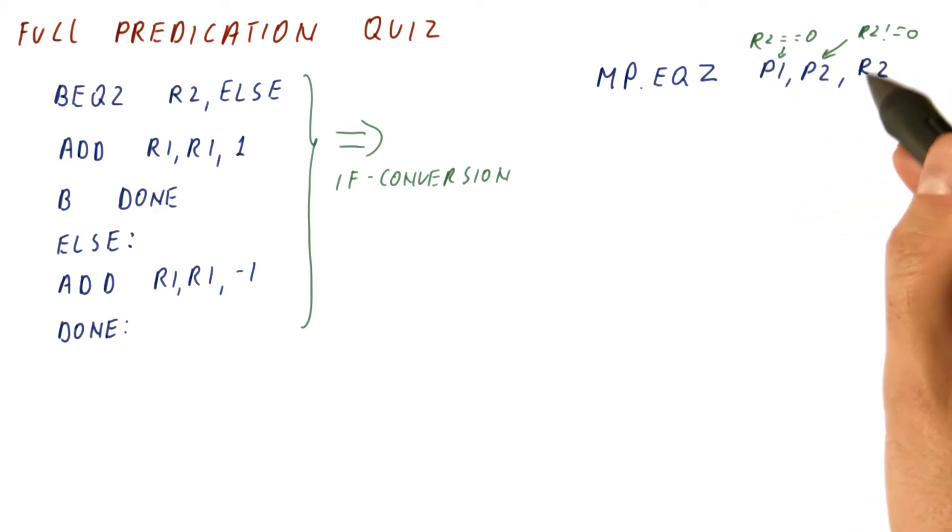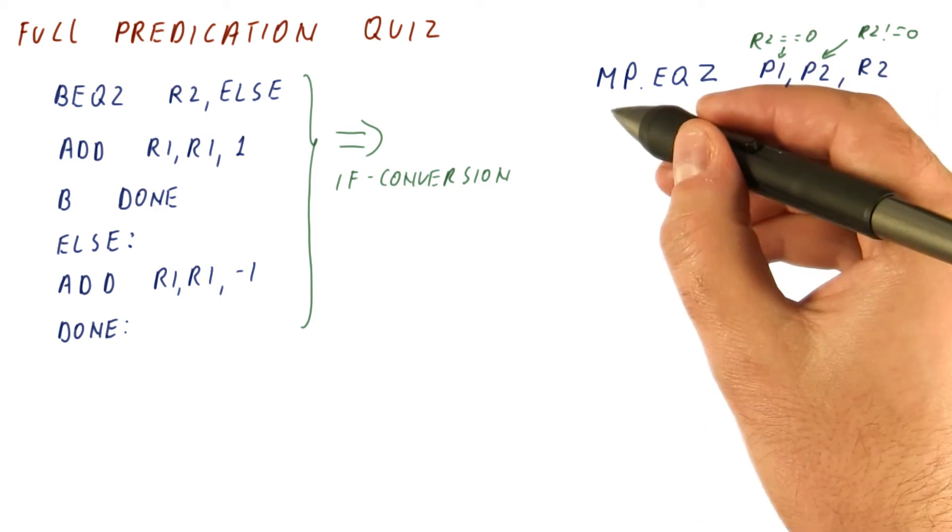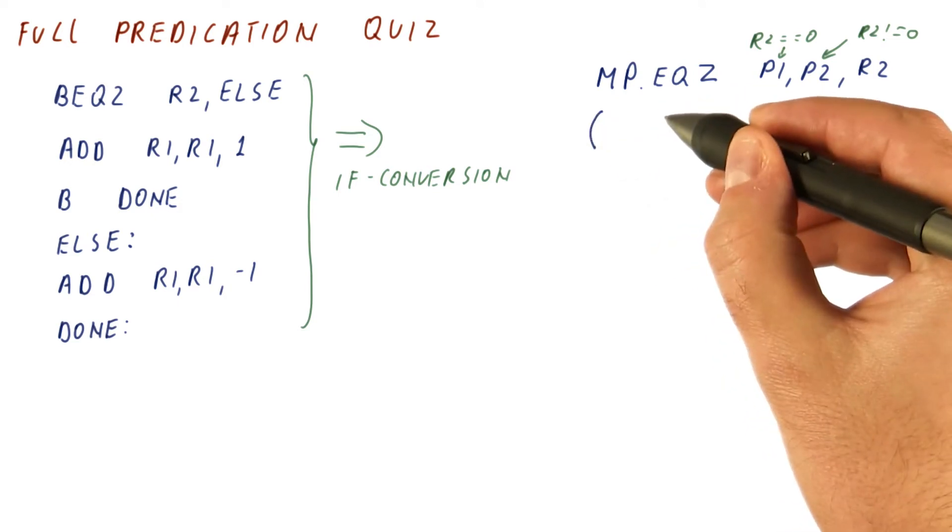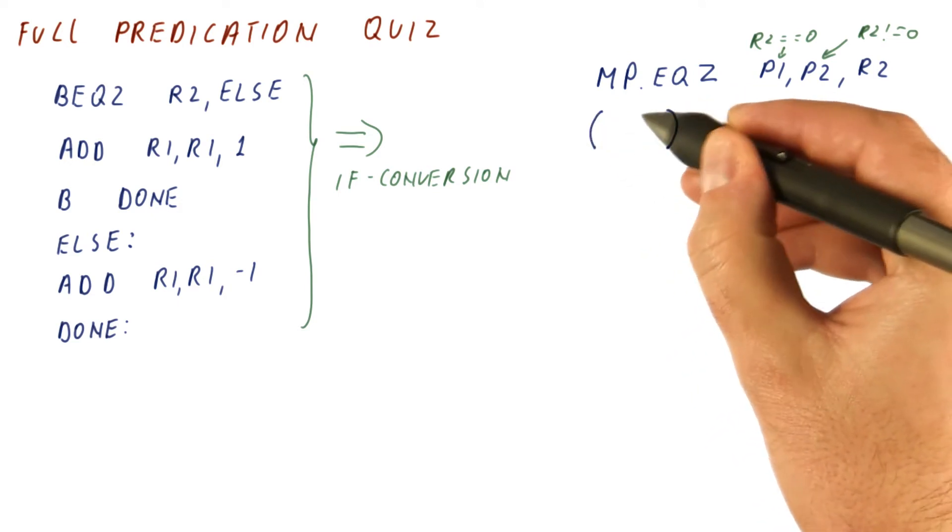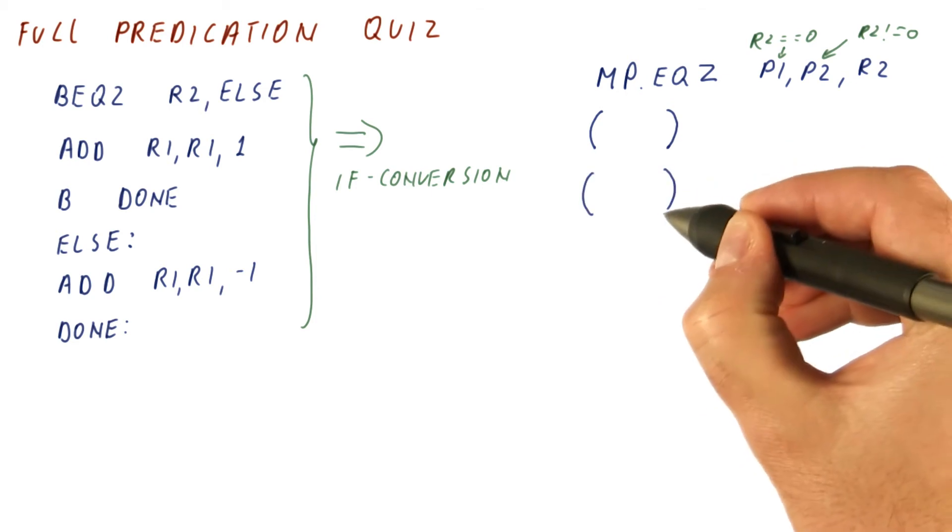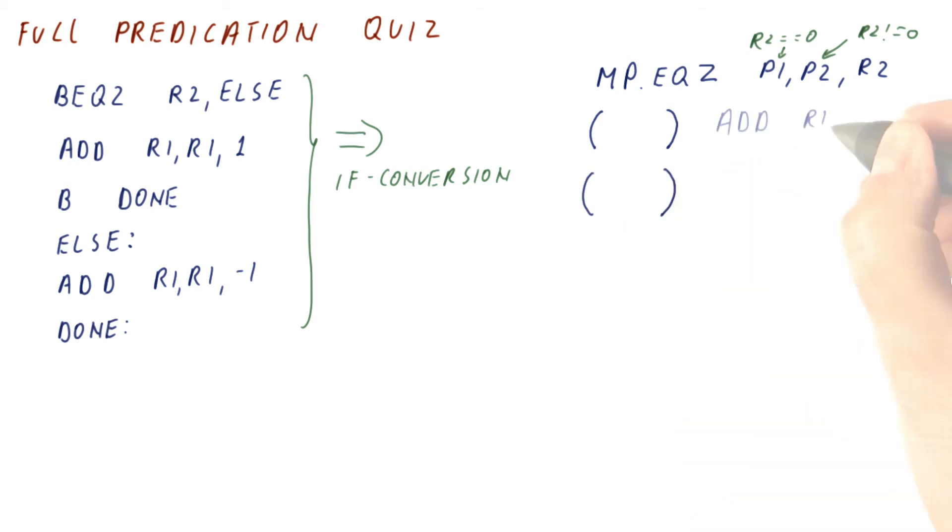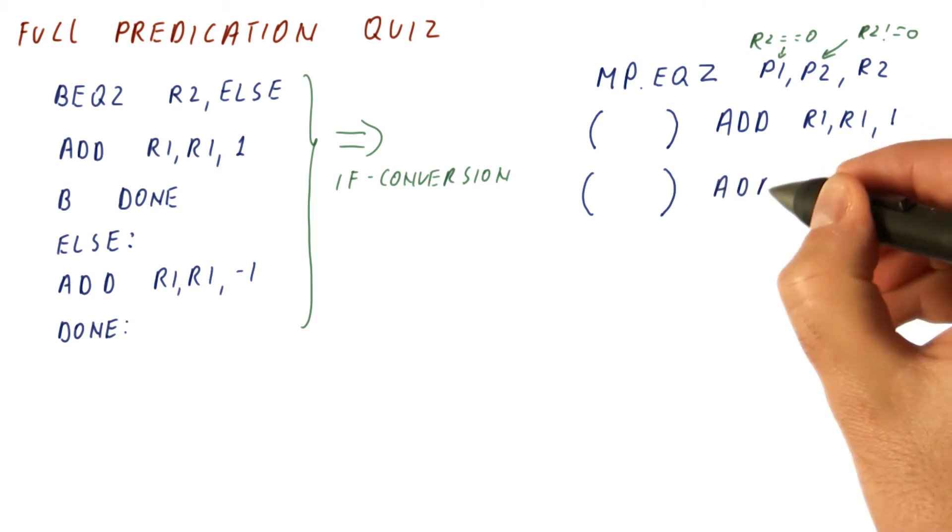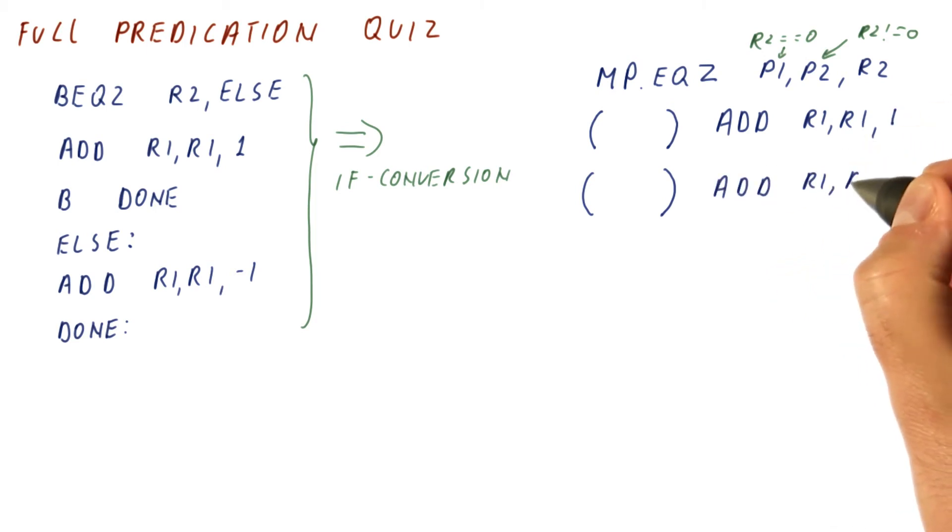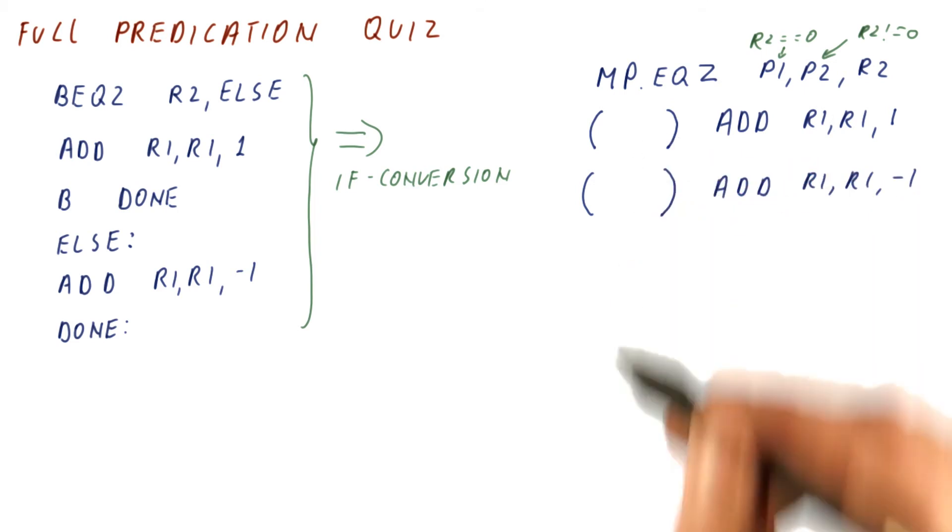This one is set if r2 is equal to 0. So the actual question for you is what goes into the predicate for the next instruction and the predicate for the next instruction after that. And then the two instructions are add r1, r1, 1, and add r1, r1, minus 1. So what are the predicates here?